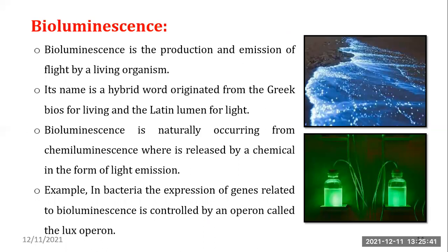Bioluminescence is the production and emission of light by a living organism. Its name is a hybrid word originating from the Greek 'bios' for living and the Latin 'lumen' for light. Bioluminescence is a naturally occurring form of chemiluminescence where light is released by a chemical reaction. For example, in bacteria, the expression of genes related to bioluminescence is controlled by an operon called the lux operon.